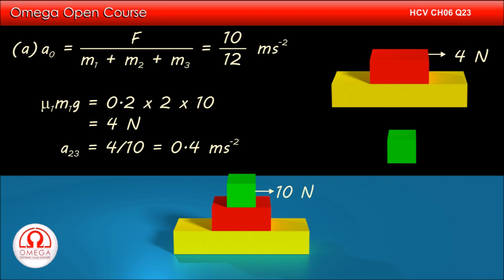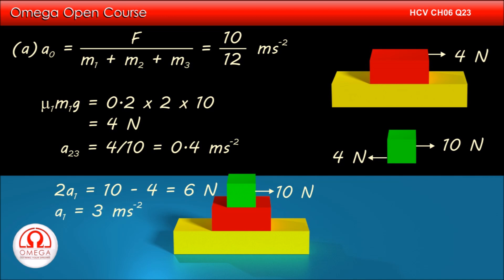On M1, the horizontal forces acting are 10N force in the forward direction and 4N friction in the backward direction. Therefore, the net horizontal force on the block is 10 − 4, or 6N. The mass of the block is 2 kg. Therefore, its acceleration is 3 meters per second square.